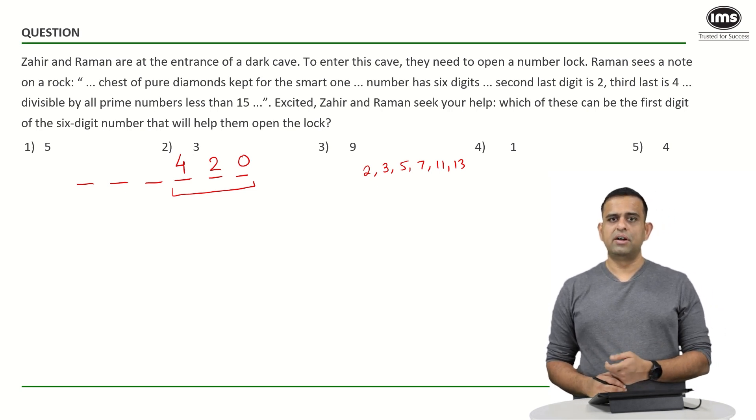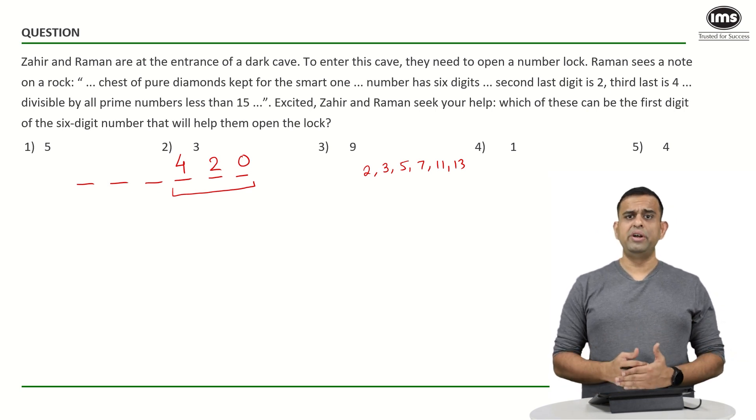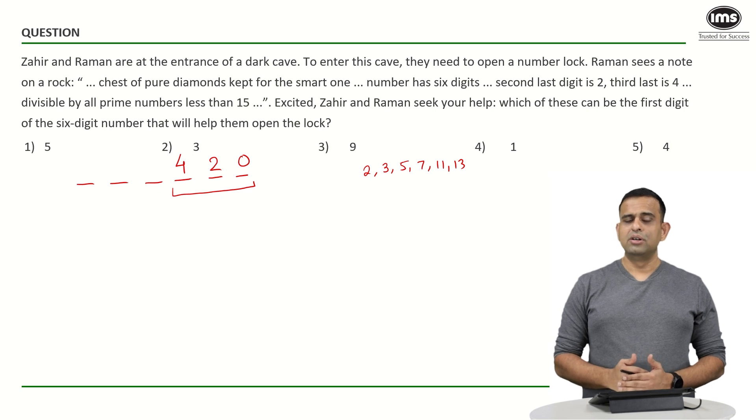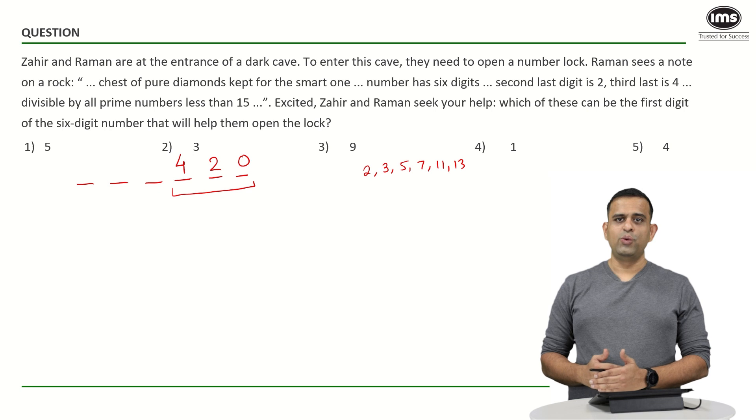So in this particular case, since the number 2, 3, 5, 7, 11, 13 happens to be co-prime or you can say prime itself, it has to be divisible by the number multiplication of 2 into 3 into 5 into 7 into 11 into 13.